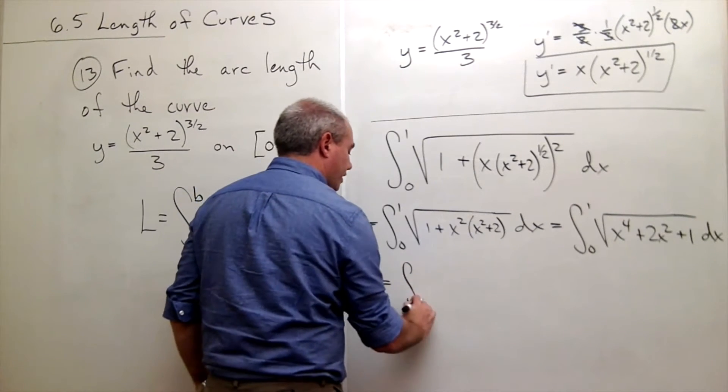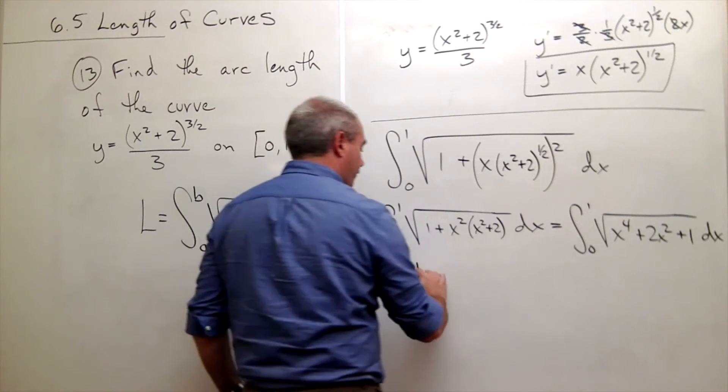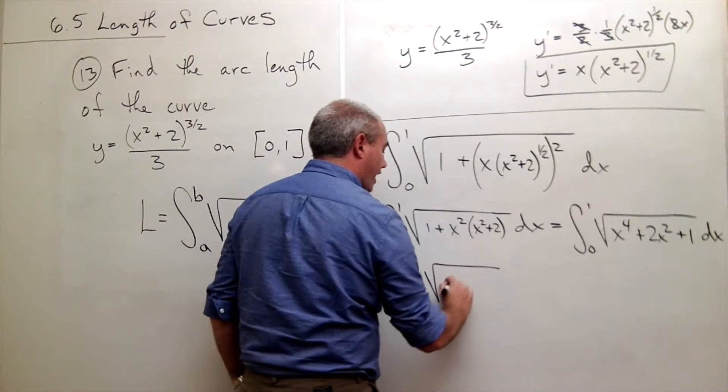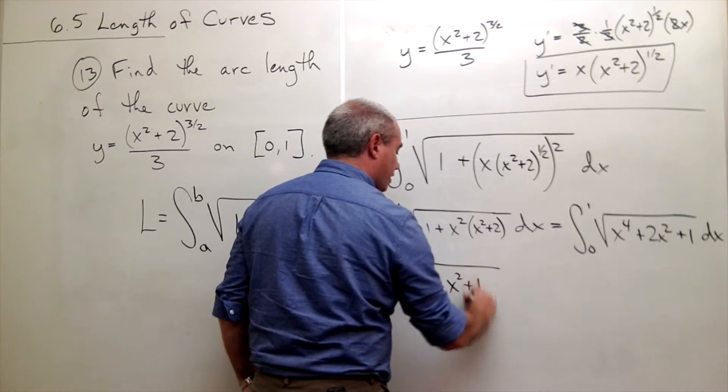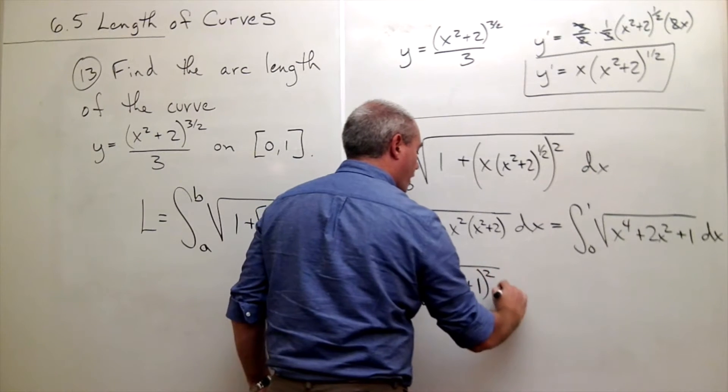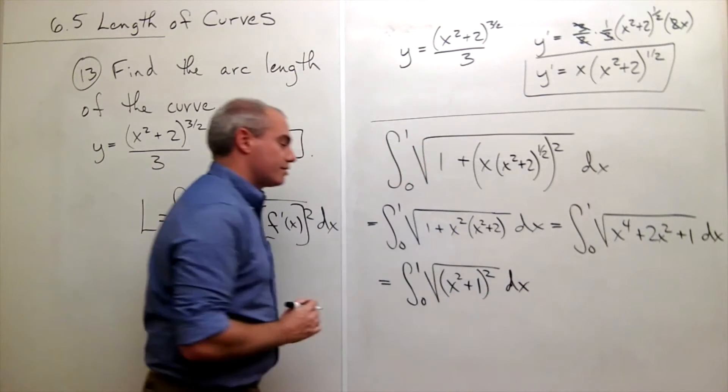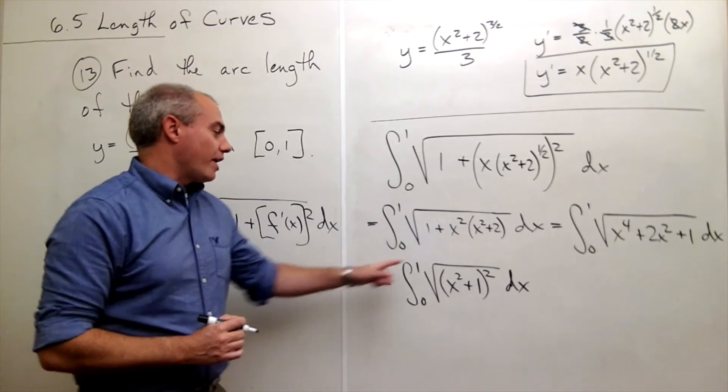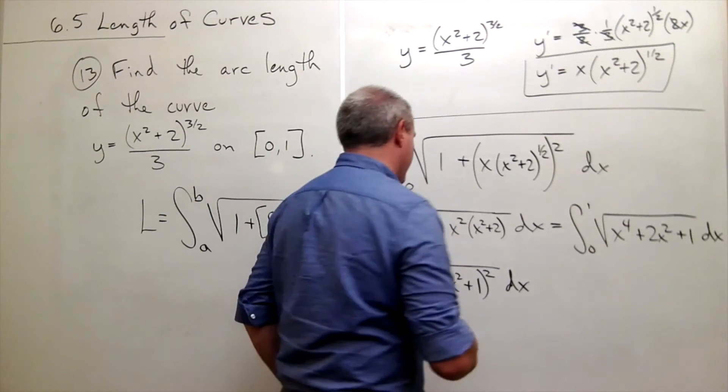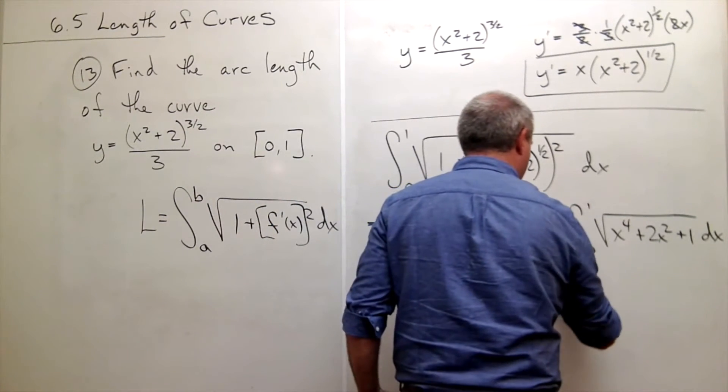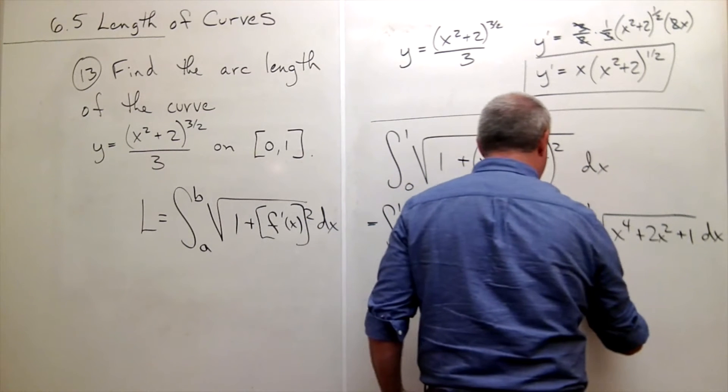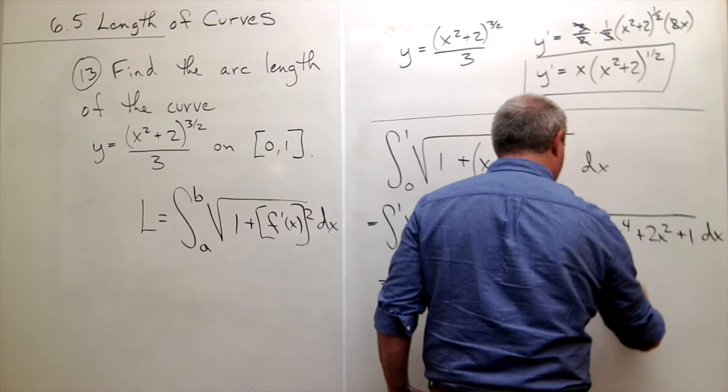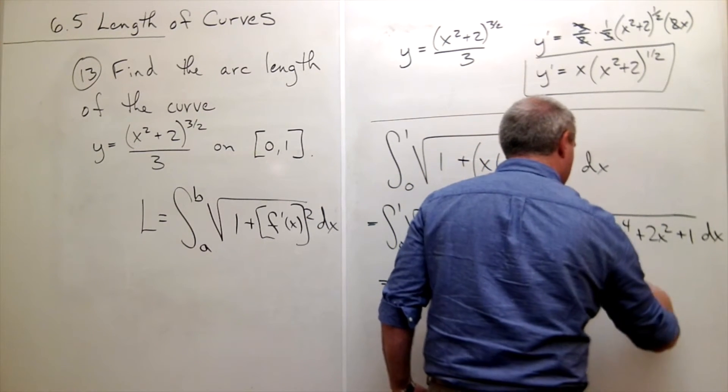So if I factor that, I get integral from 0 to 1 of the square root of x squared plus 1 quantity squared dx. But now I have the square root of a square, which is quite nice, and I get the integral from 0 to 1 of x squared plus 1 dx.